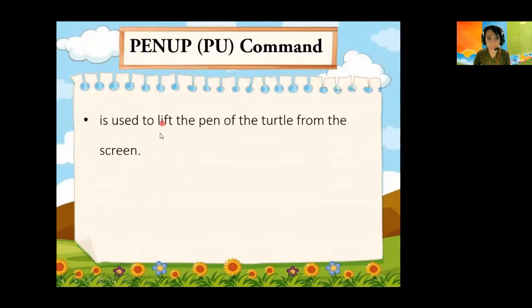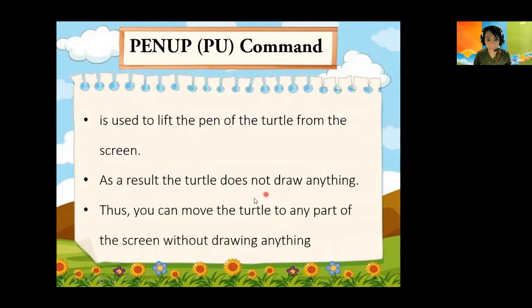Next, PU. PU command is used to lift the pen of the turtle from the screen. As a result, the turtle does not draw anything. Thus you can move the turtle to any part of the screen without drawing anything.